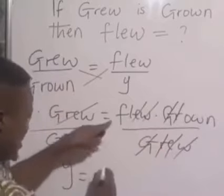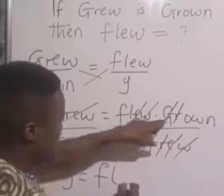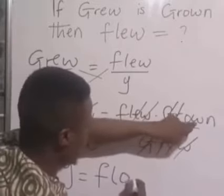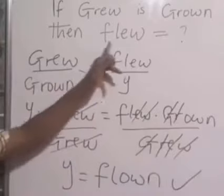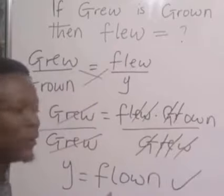So, y is f, l, o, w, and n. Therefore, the past participle of flew is flown. Thank you.